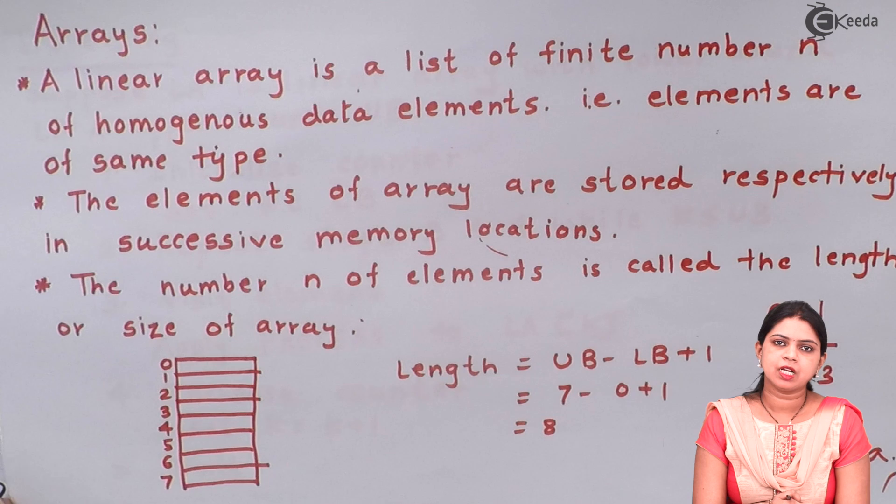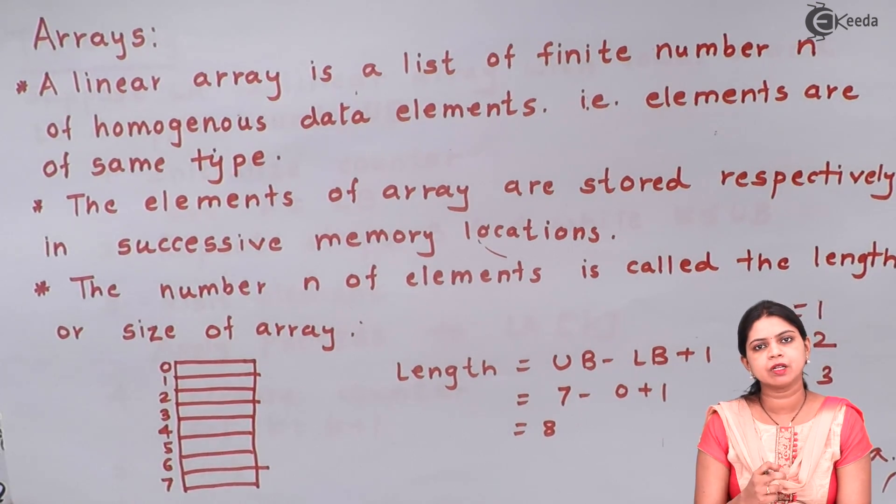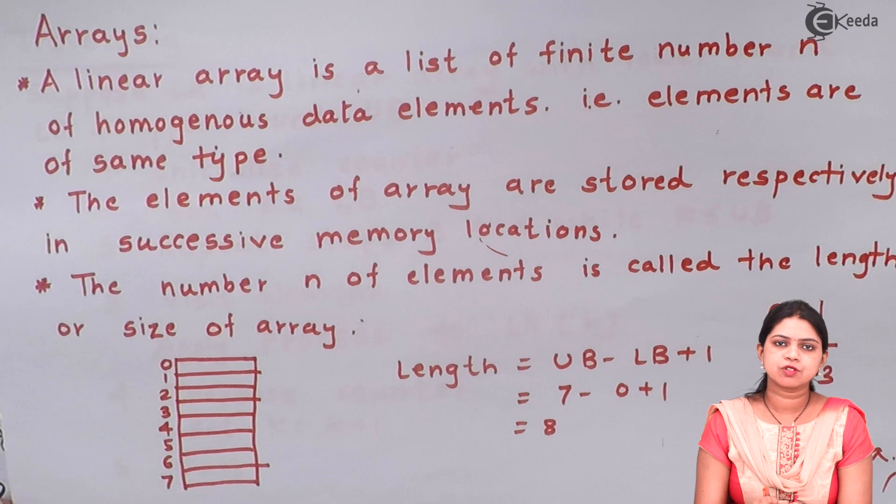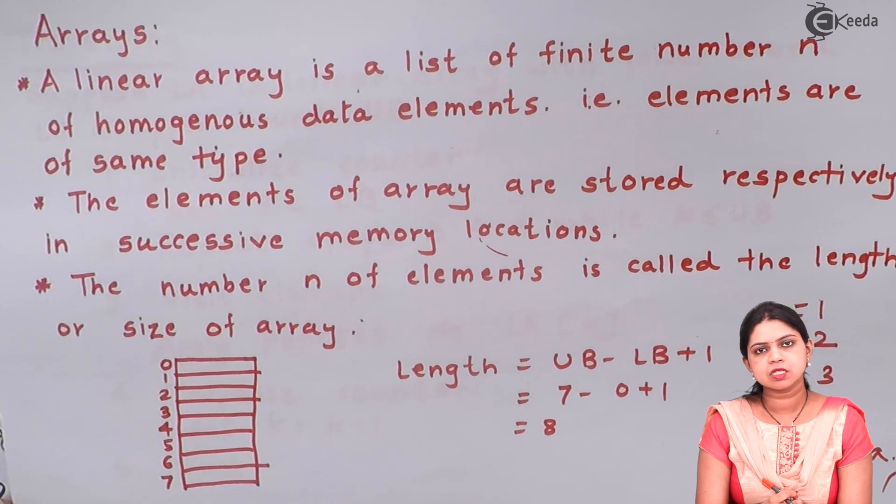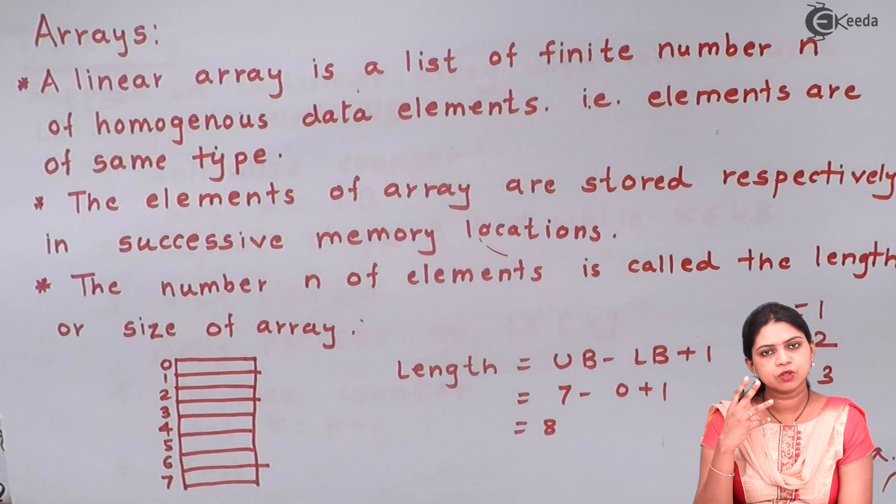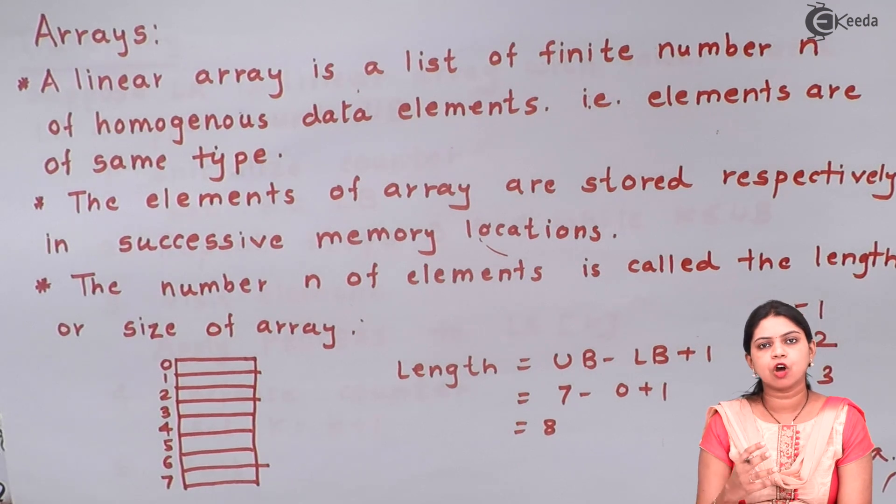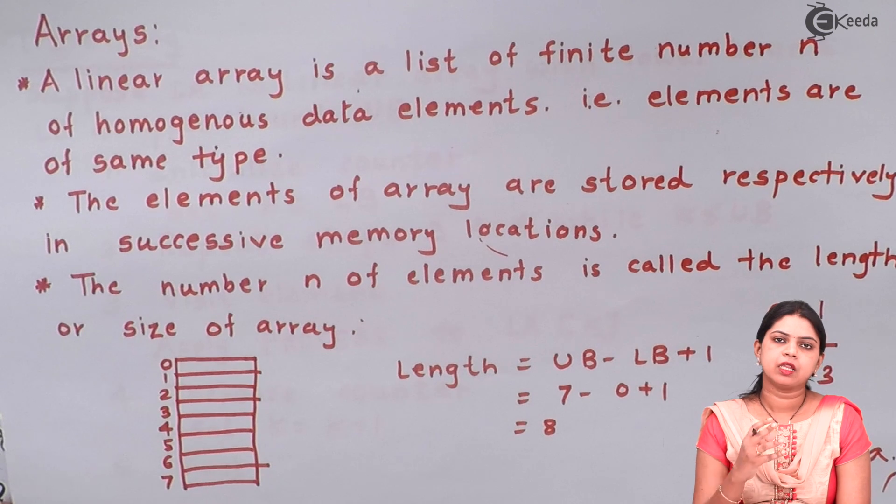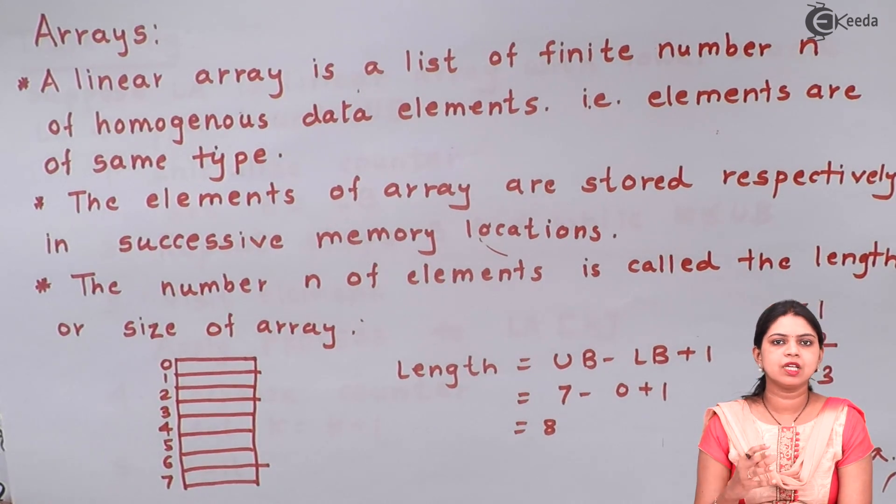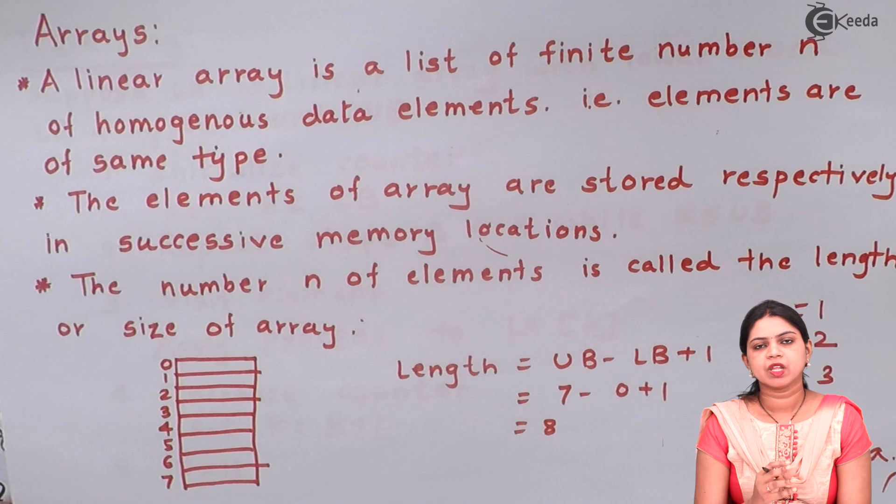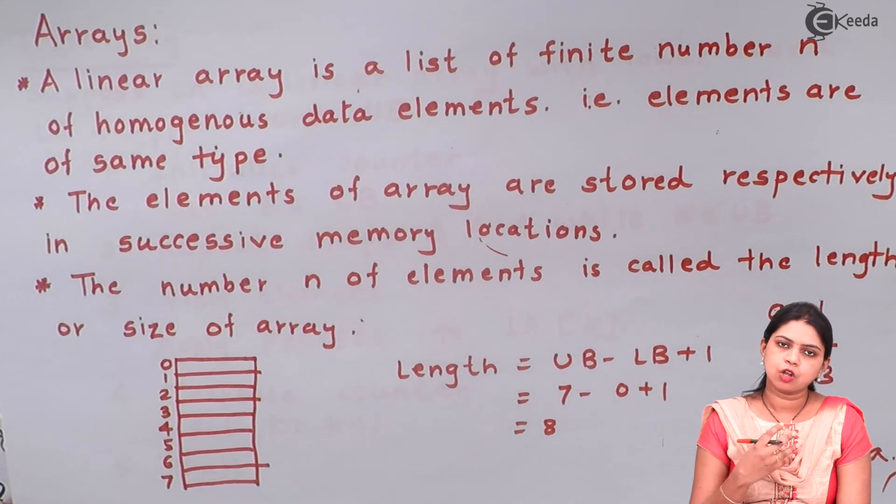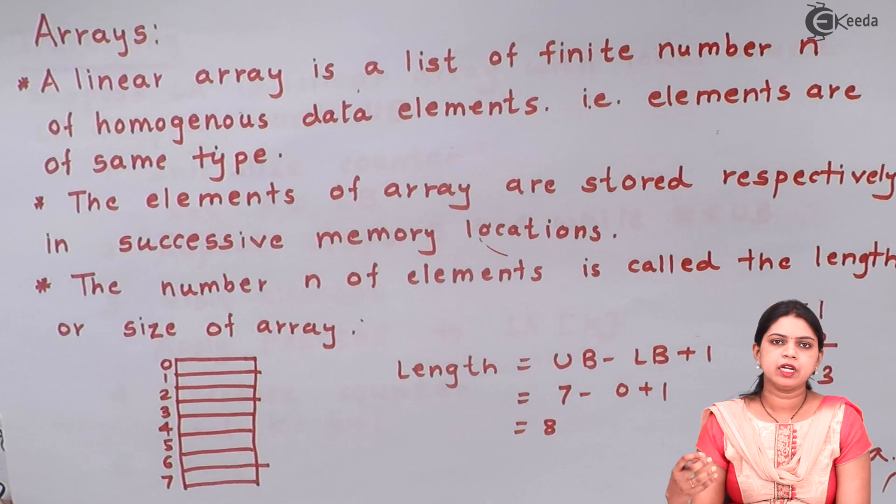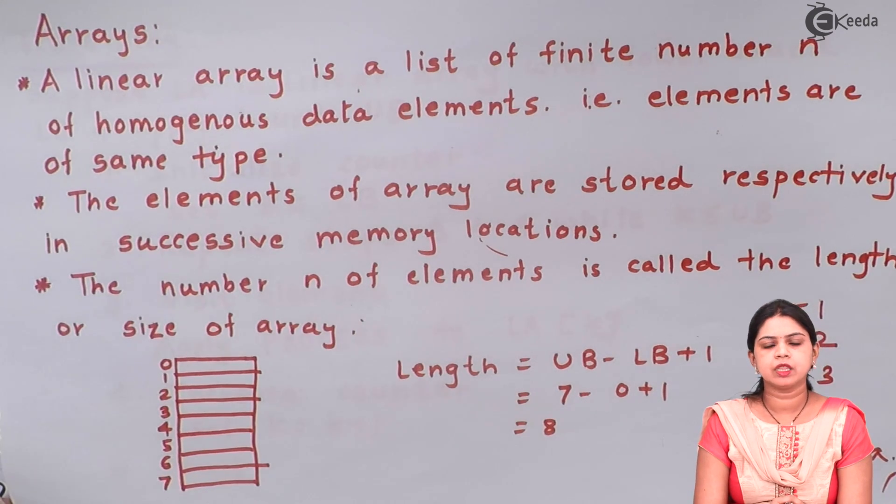So array variable can hold more than one values at a time. Array is a collection of values of same data type. Same data type means the values which we are storing should belong to the same data type. If I declare my array as an integer array, then all the values which I will be storing inside the array should be of integer type. If I declare it as a float, then all the values should be float type. Decimal values, the integer values won't be allowed in that array.